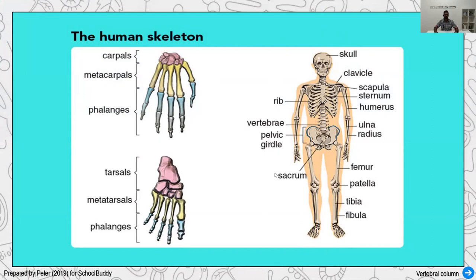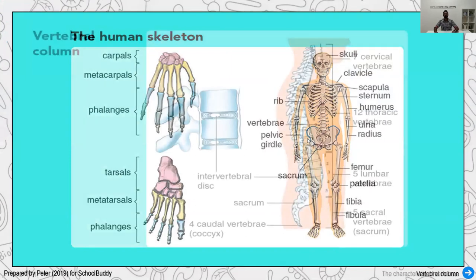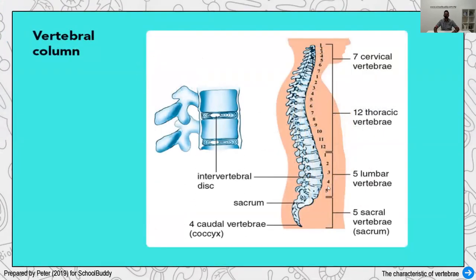We're going to further look at one important structure, which is the vertebral column — our backbone. It can be divided into four main parts. We start with the cervical vertebrae, of which there are seven, followed by 12 thoracic vertebrae, five lumbar vertebrae, five sacral vertebrae (called the sacrum), and four coccyx vertebrae, which is our tailbone. In between these vertebrae, we have discs that absorb shocks and reduce friction between the bones.